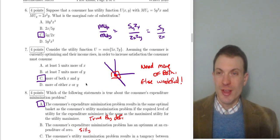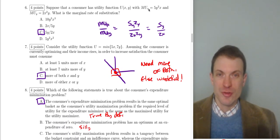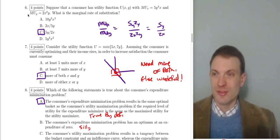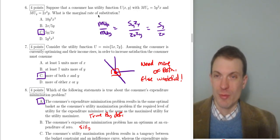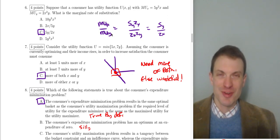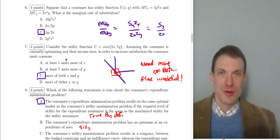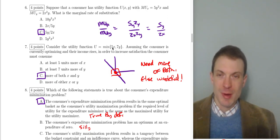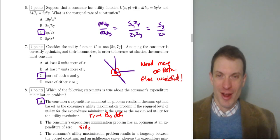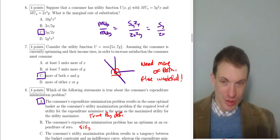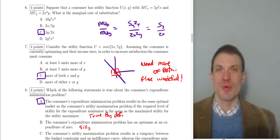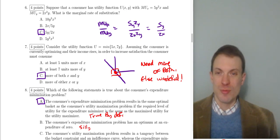Question six: with MUx = 5y²x and MUy = 2x²y, the MRS is MUx/MUy = 5y/(2x). For the perfect complements case where utility is min(5x, 7y): if the consumer is already optimizing and income rises, they need more of both goods. Getting more of only one good would be wasteful — you need more of both x and y to move to a higher indifference curve.